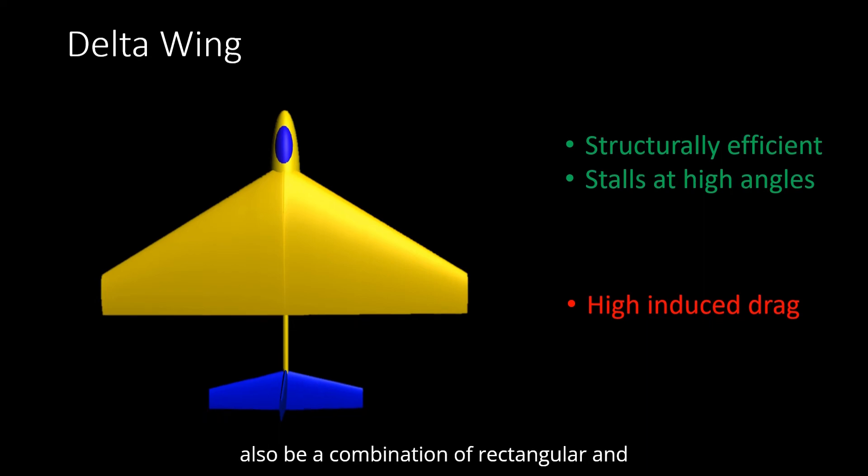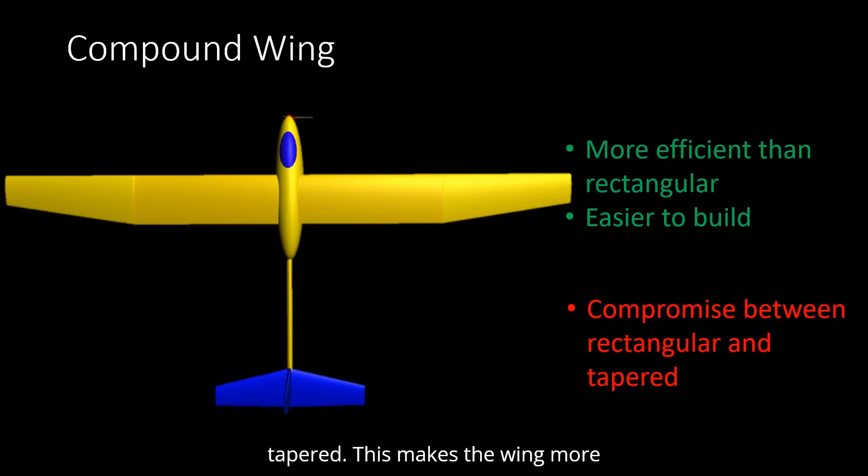A wing can also be a combination of rectangular and tapered. This makes the wing more efficient, while maintaining the ease of design and building. The bending moments are also lesser compared to simple rectangular wings.